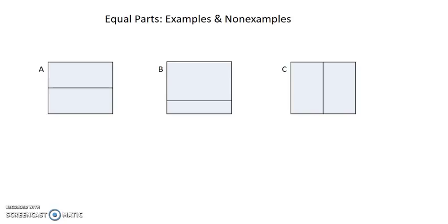Equal parts means the same size. Let's look at some examples of partitioned shapes and see if they are partitioned equally. Which shape is not partitioned equally? Shape B is not partitioned equally because the two parts are not equal in size. We say that B is a non-example. A and C are examples of partitioning equally.